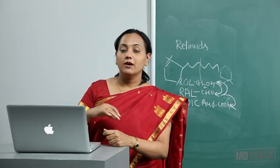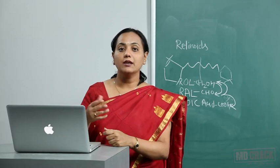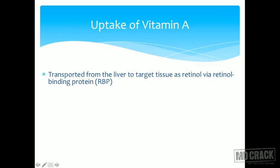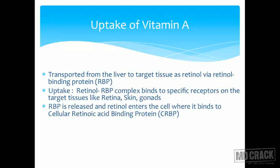For the uptake of vitamin A by target tissues, it is transported from the liver as retinol via retinol binding protein (RBP). RBP binds to retinol and carries it to all tissues where vitamin A has its function. The retinol-RBP complex binds to specific receptors on target tissues — whether it is the retina, skin, or gonads. Once bound, RBP is released and retinol enters the cell.